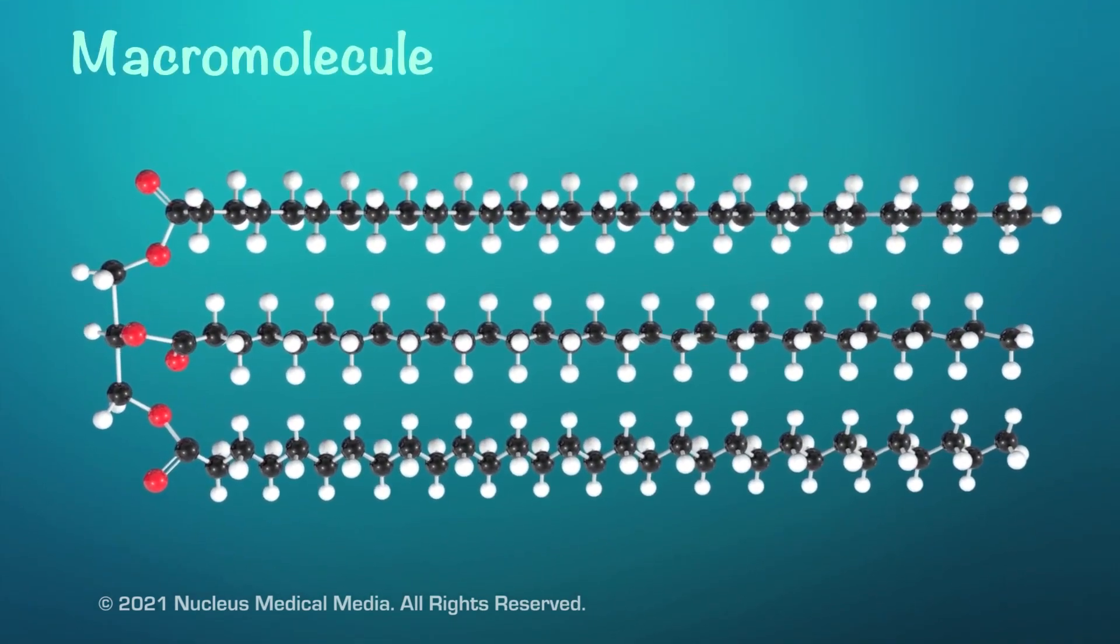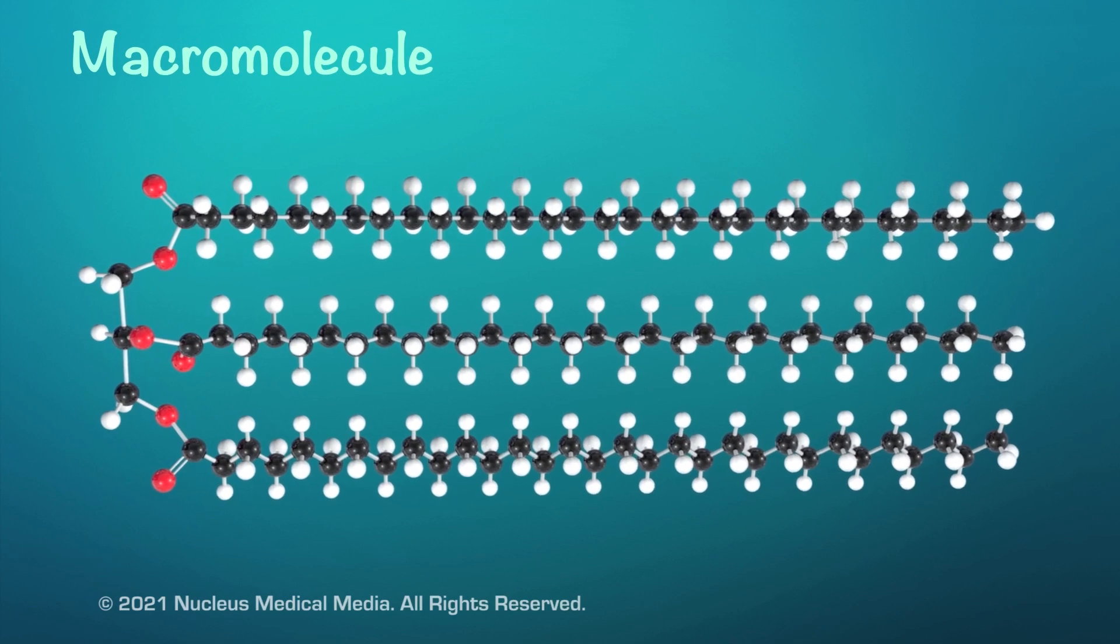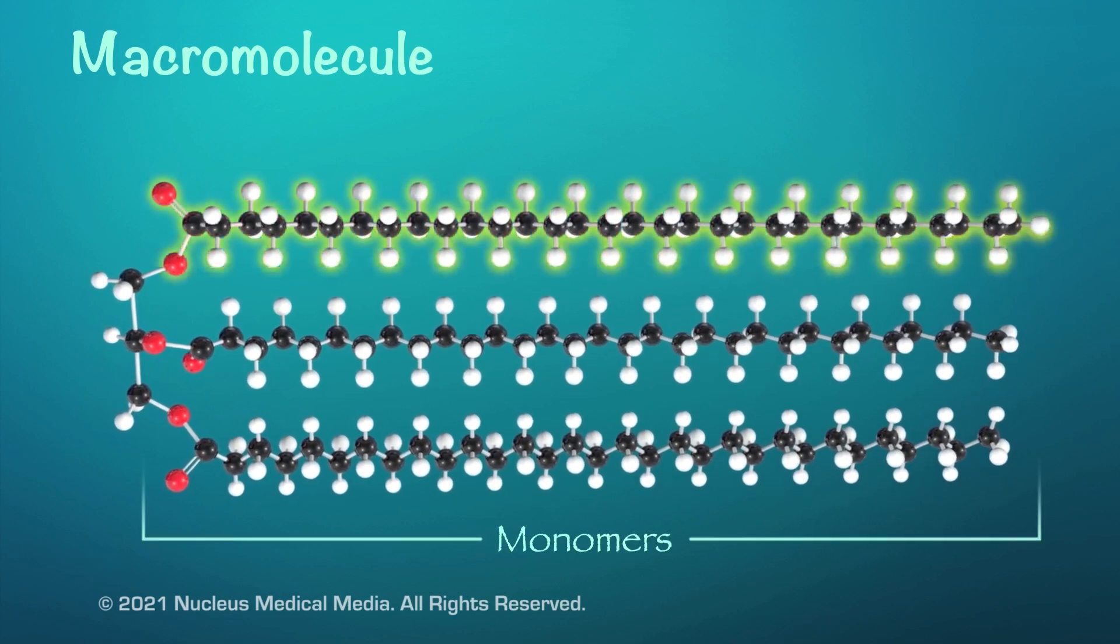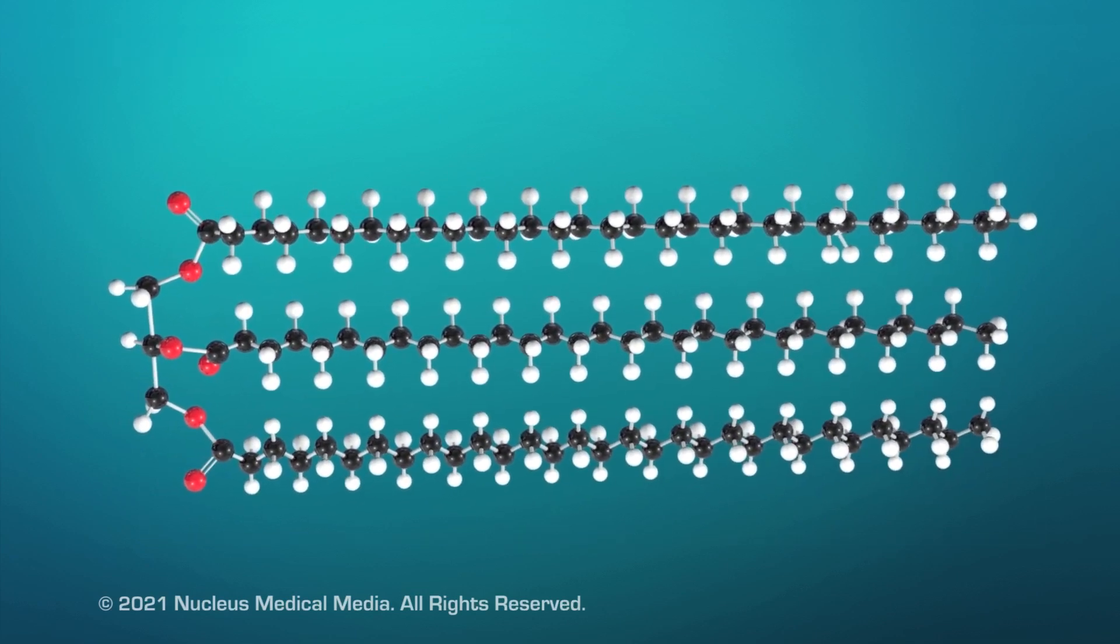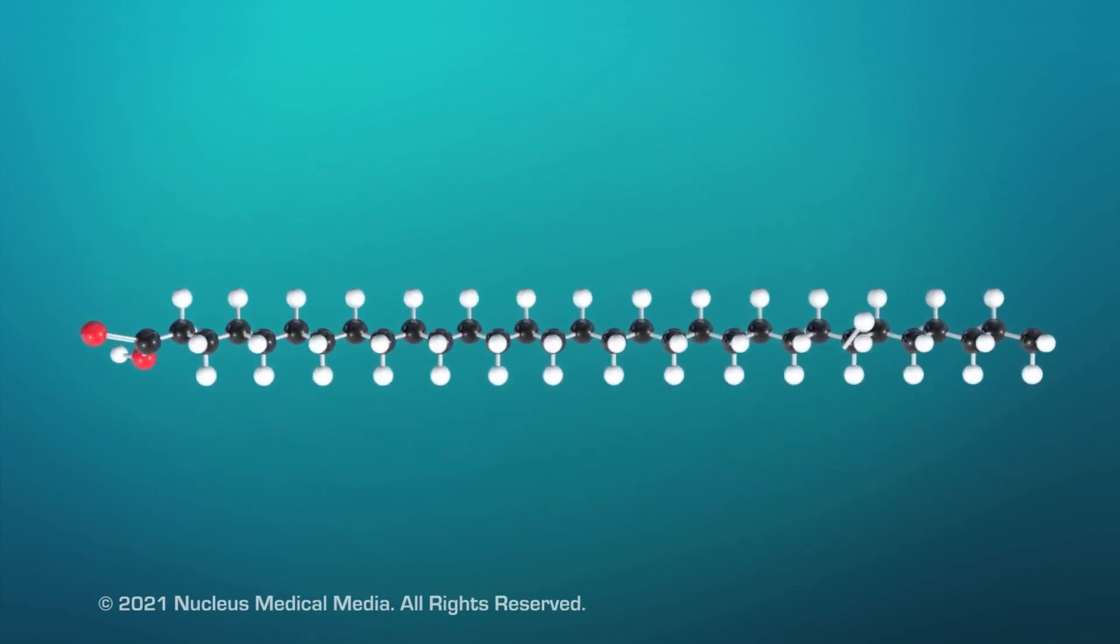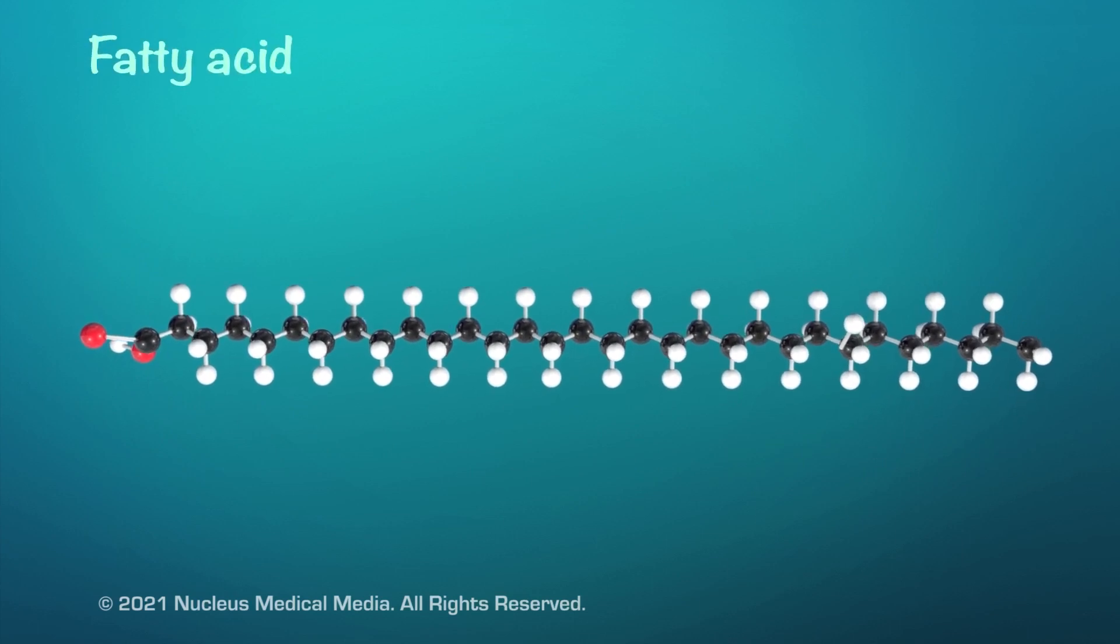Organic macromolecules, such as lipids, are formed by many units called monomers that are chemically bonded together. In lipids, the typical monomer is something called a fatty acid.